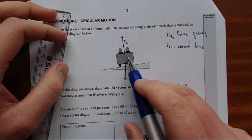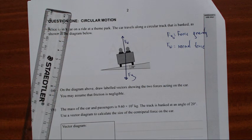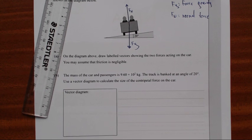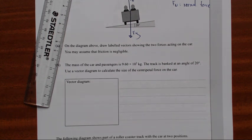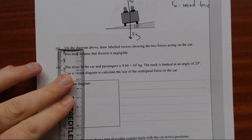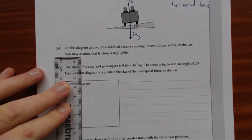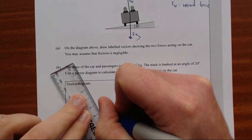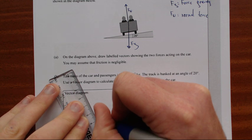So that means if the car is not moving it's just going to fall down the track. The mass of the car and its passengers are 960 kg and the track is banked at an angle of 20 degrees. Use a vector diagram to calculate the size of the centripetal force on the car. So first and foremost we shall draw our gravitational force. I'll start with the normal force, so I'm going to exaggerate it just a little bit to make my triangle a little easier to understand.